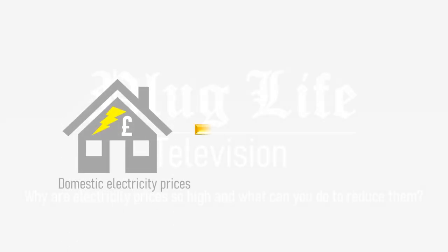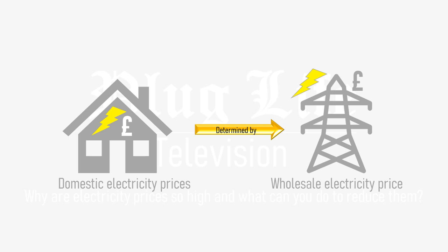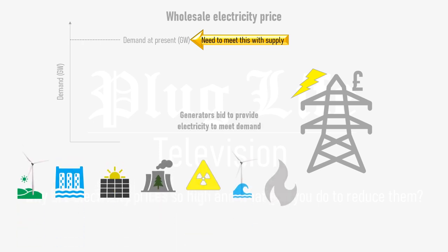Domestic electricity prices are driven by the wholesale electricity price, which is determined by supply versus demand. At a given time there'll be a certain demand that has to be met with supply from various generators connected to the national grid, including wind farms, nuclear power plants and so on. These generators bid to meet the demand with a certain number of gigawatts of power for a given price per unit of electricity, or kilowatt hour, provided to the grid.